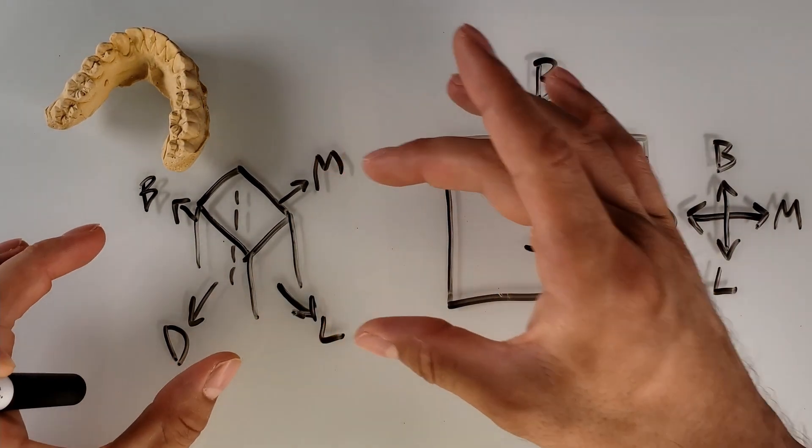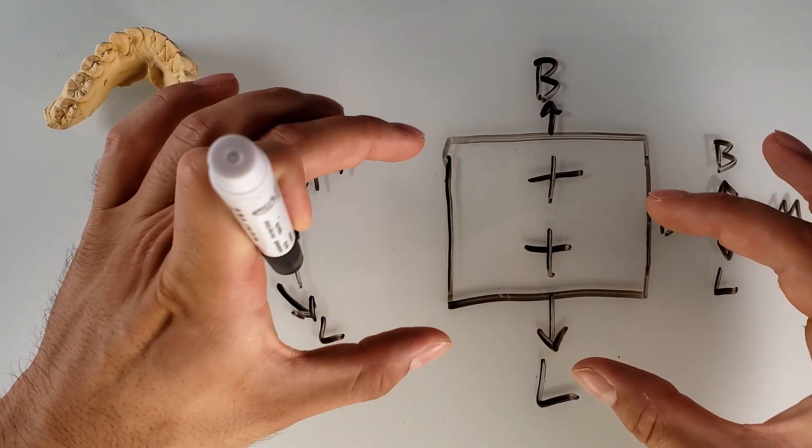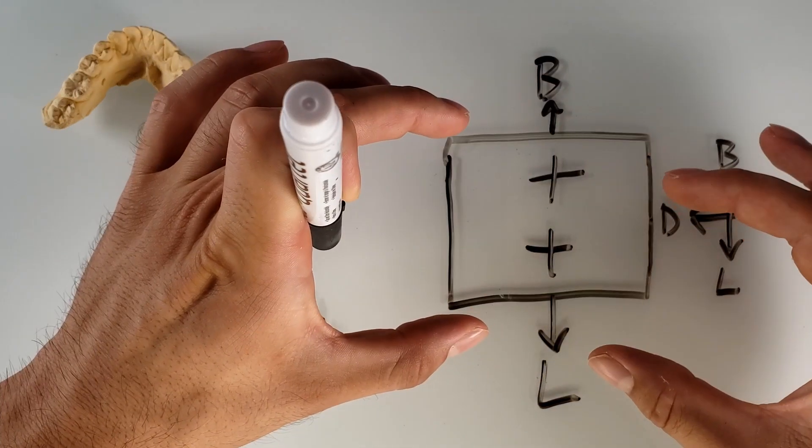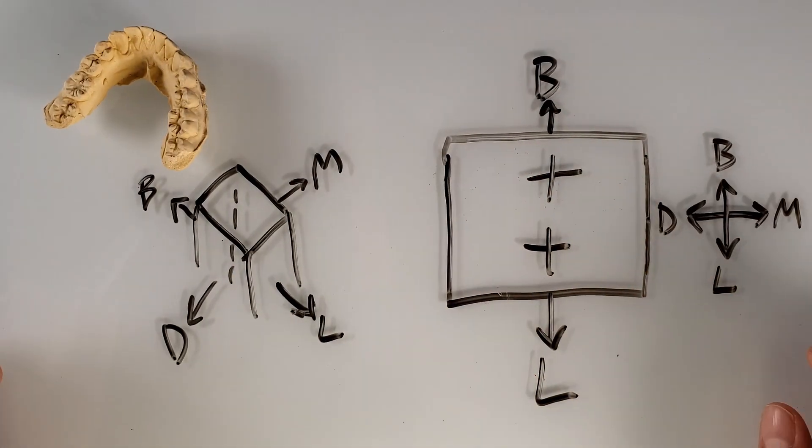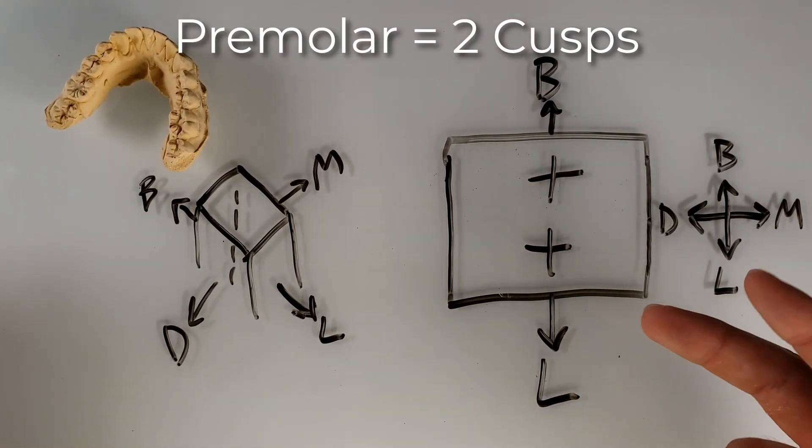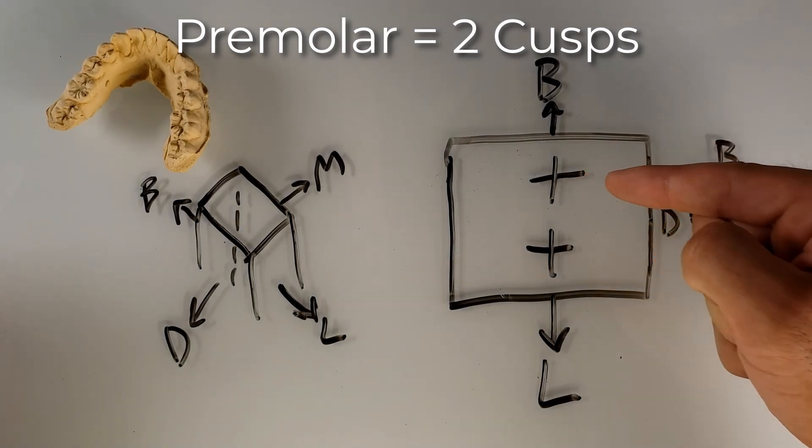Now keep in mind, this is this picture just turned a little bit, okay? Just turned a little bit, and again, we're seeing that occlusal perspective. For premolars, we only have two cusps, and it is going to be a buccal and a lingual.